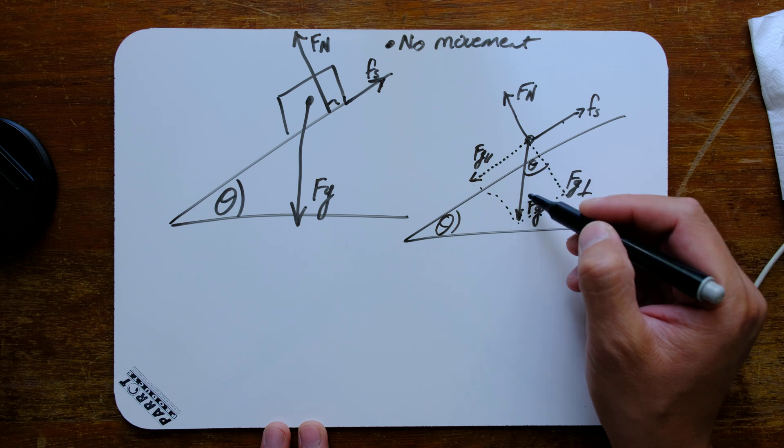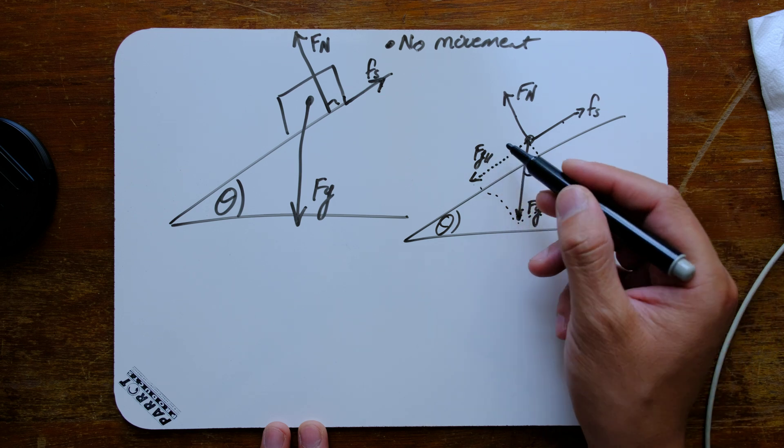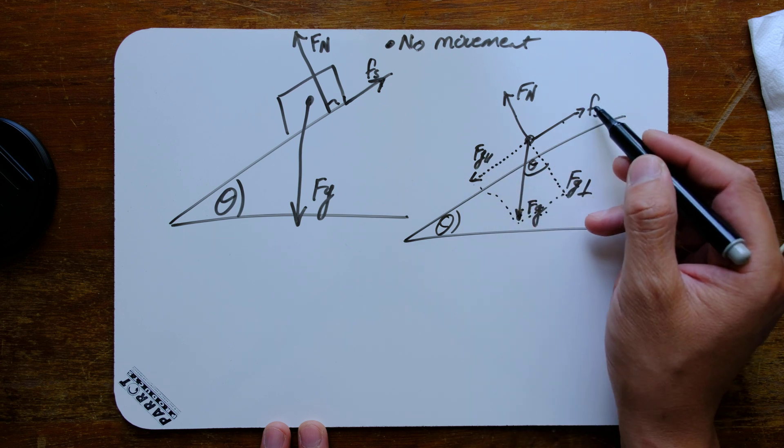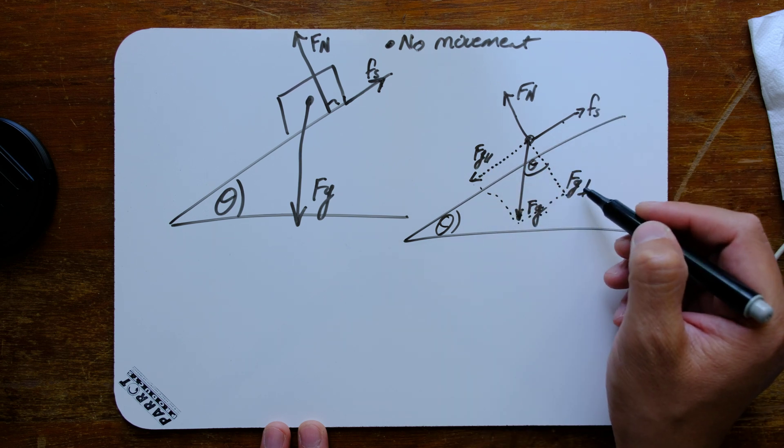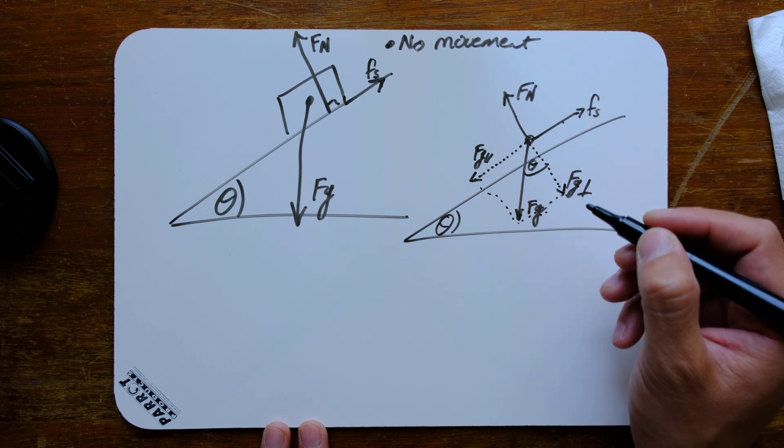But now that we have broken fg into its components, now we can actually use fg and fs to subtract from one another and fg perpendicular and fn to subtract from one another.